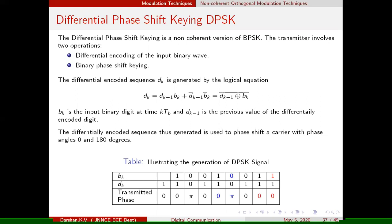When transmitting symbol 1, you check the phase of the carrier — you need not change the phase. When transmitting symbol 0, you check the phase of the carrier and advance it by pi radians. In this example, before transmitting symbol 0, the carrier phase was pi, so advancing by pi results in 0 degrees.